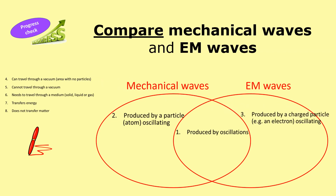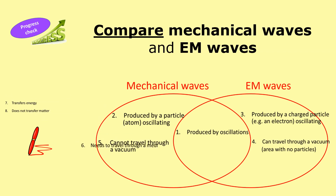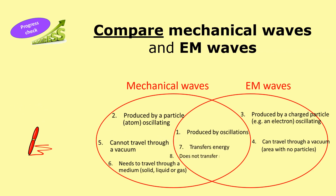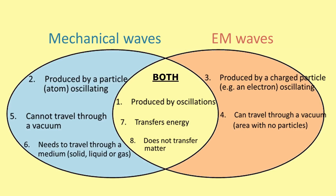It's electromagnetic waves that are produced by charged particles oscillating or vibrating. Number four: the wave that can travel through a vacuum is the electromagnetic wave. And number five: it's the mechanical wave that cannot travel through a vacuum. Six: it's the mechanical wave that needs to travel through a medium — your solid, your liquid, or your gas. And electromagnetic waves are produced by charged particles oscillating, and they can travel through a vacuum.